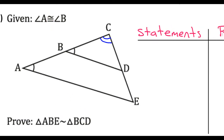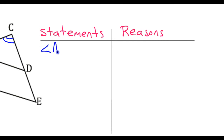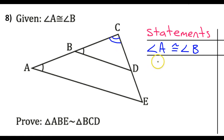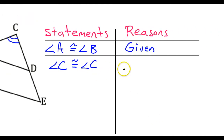Of course, we'll start off with the given: angle A is congruent to angle B — and of course, that's given. Other than the given angle, we only needed one more piece of information to prove these triangles are similar, and that's angle C is congruent to angle C for both triangles. Angle C is congruent to itself, and of course that is the reflexive property.